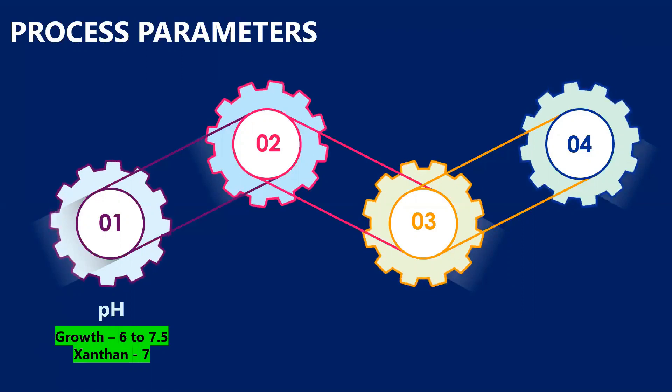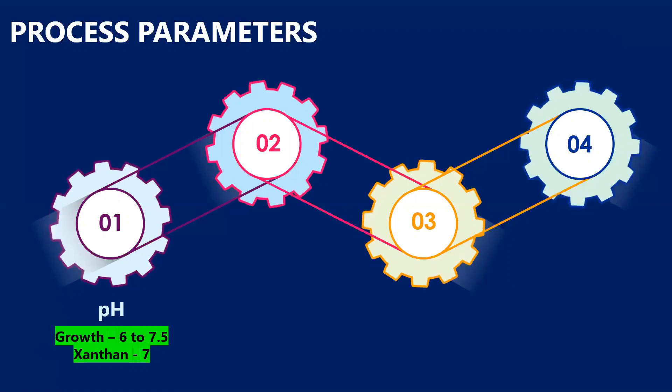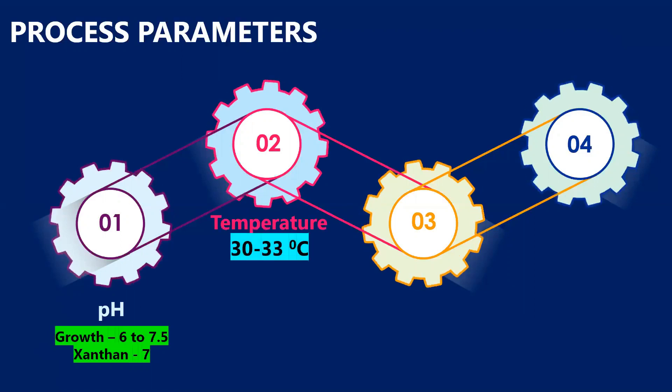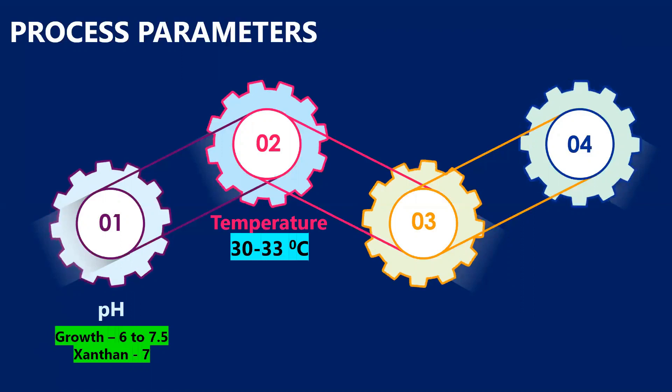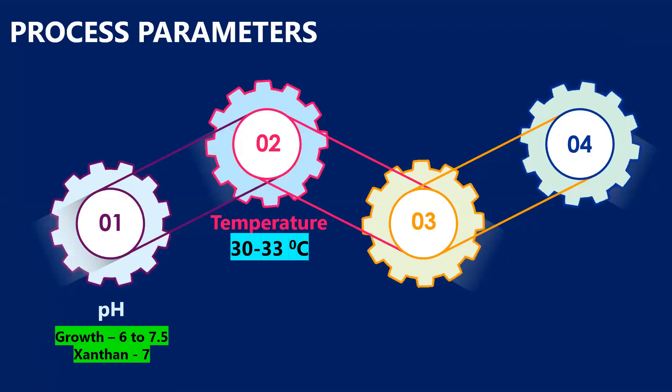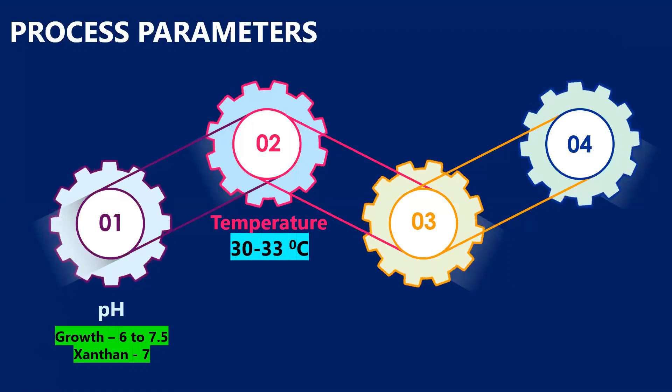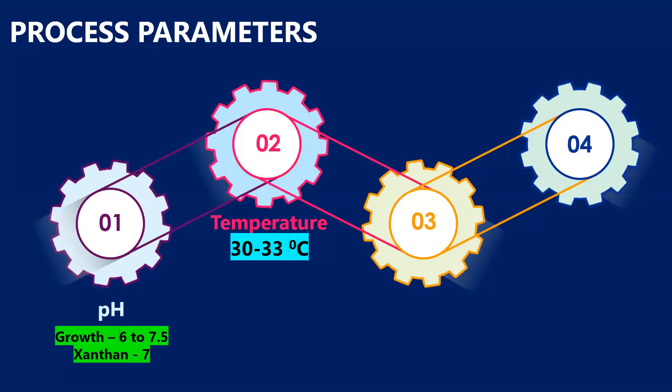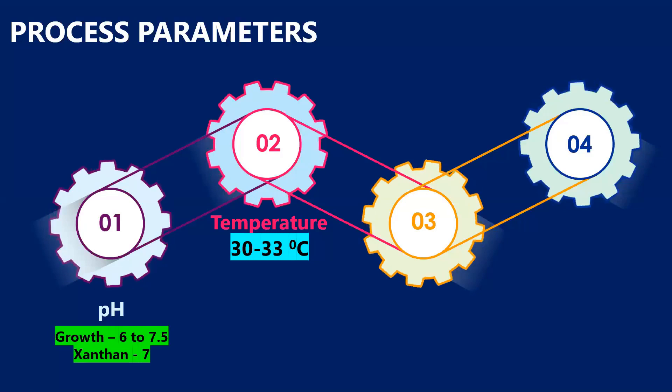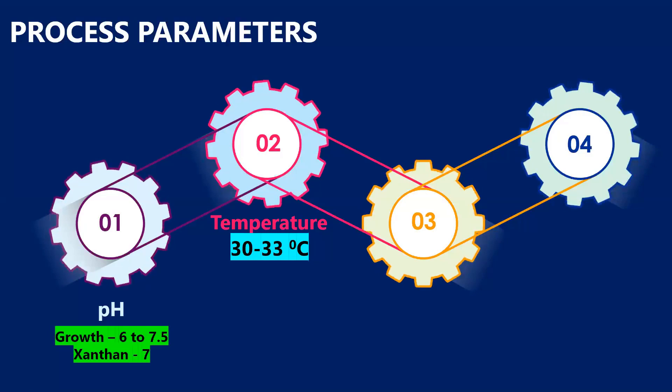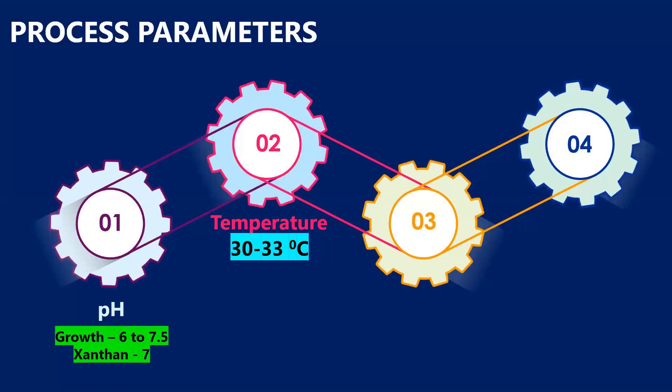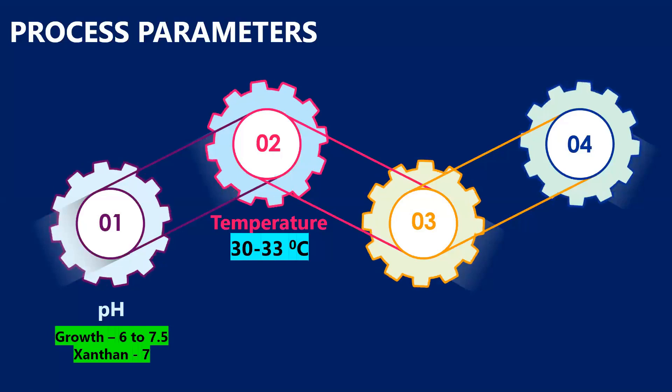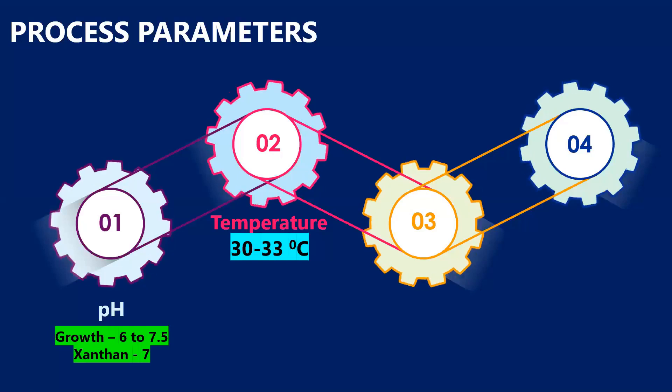Next, temperature. Optimally it is 30 to 33 degrees Celsius. Temperature basically plays a role on the molecular weight of the xanthan. The temperature regulates the acetylation: higher temperature, higher acetylation, higher the molecular weight. But as you know, we can't keep increasing the temperature as it will be detrimental to the organism.